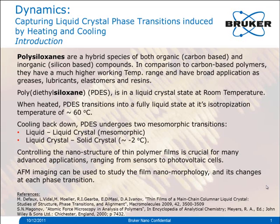Polysiloxanes are a hybrid species of both organic carbon-based and inorganic silicon-based compounds. In comparison to carbon-based polymers, they have a much higher working temperature range and have broad application as greases, lubricants, elastomers, and resins.